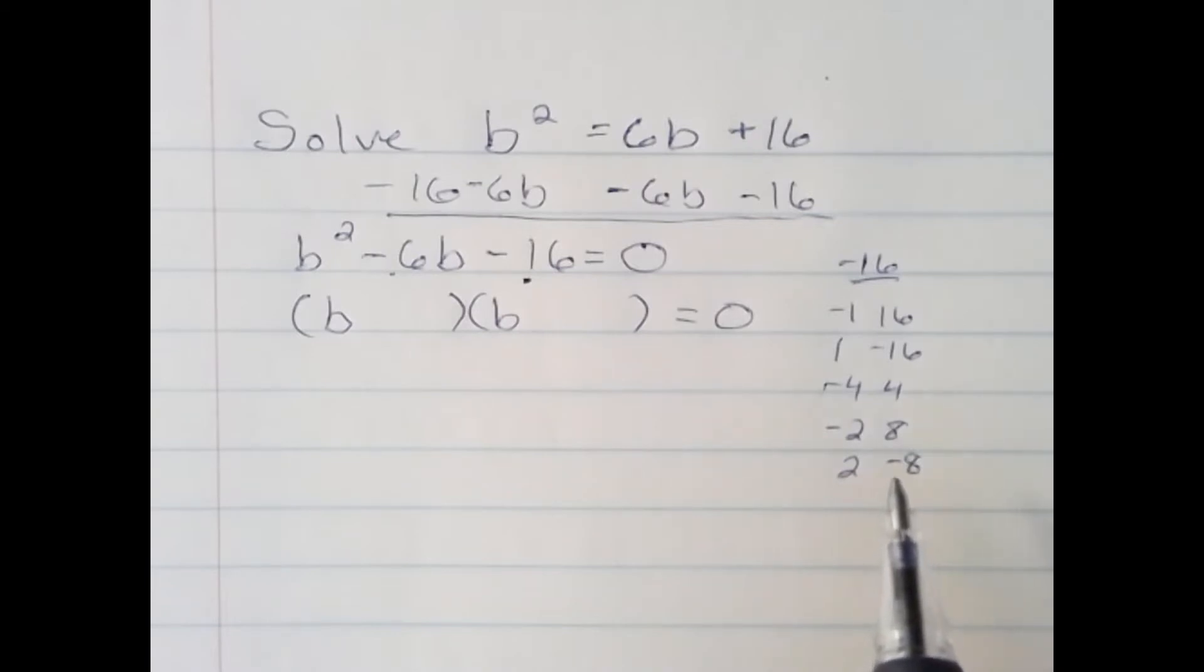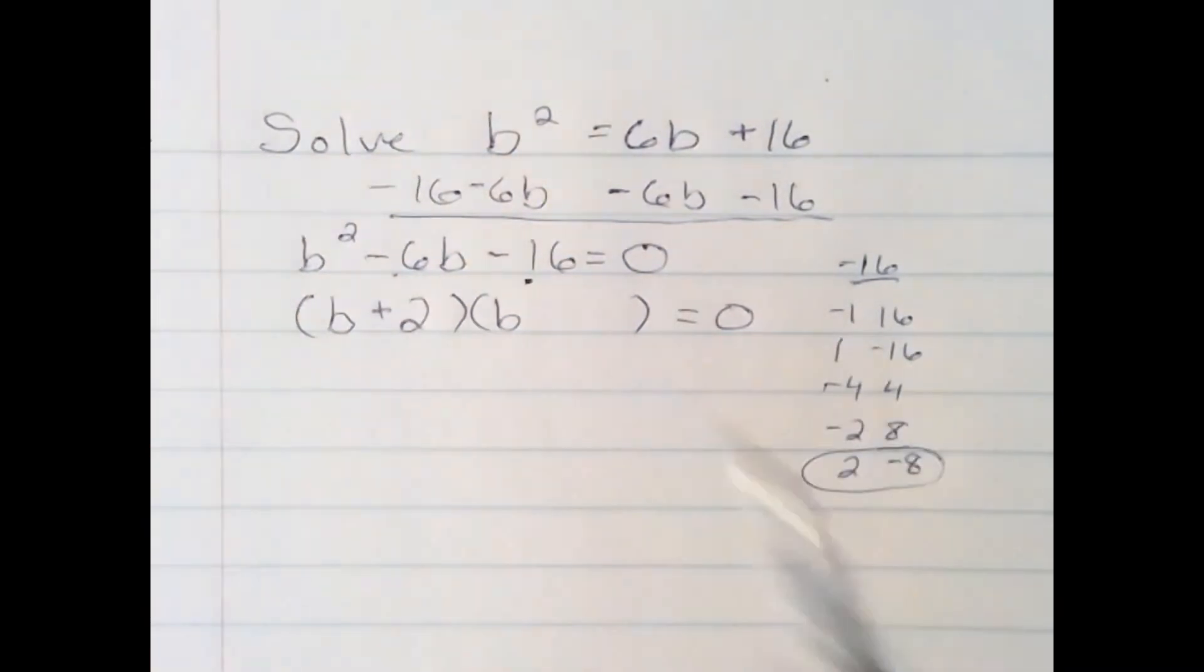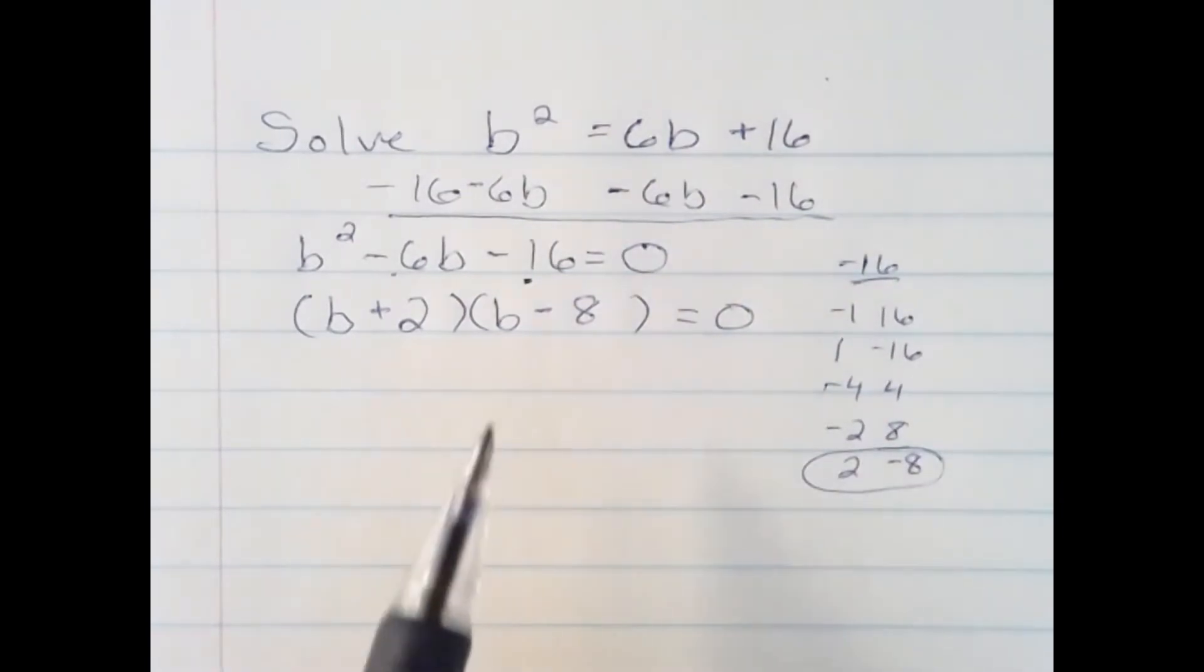However, I want the pair that will add up to negative 6. And it's this pair right here. Because positive 2 and negative 8 add up to negative 6. So I simply put those in each space here. And now I've successfully factored.